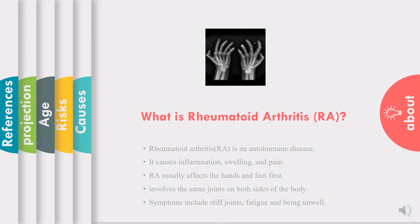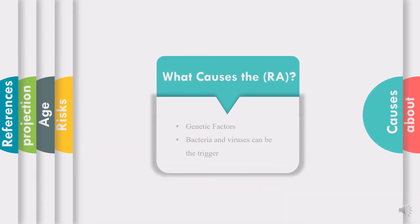Rheumatoid arthritis also affects other organs. It usually affects the hands and feet first and typically involves the same joints on both sides of the body. Common symptoms include stiff joints, fatigue, and feeling unwell. It can also affect the joints, lungs, eyes, and heart.